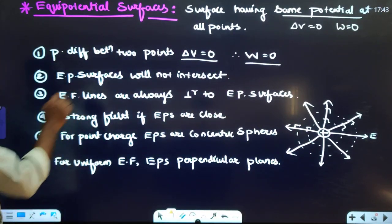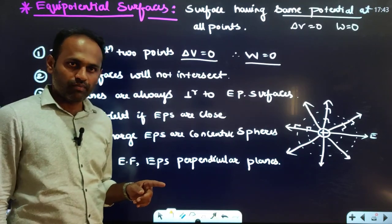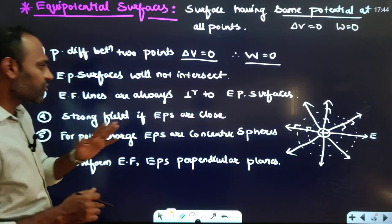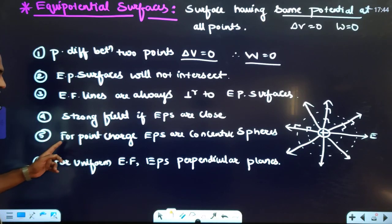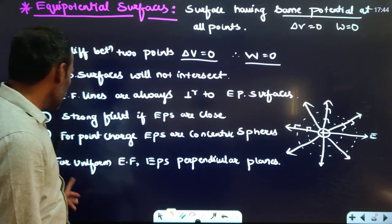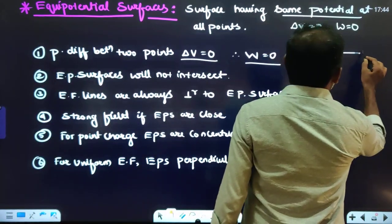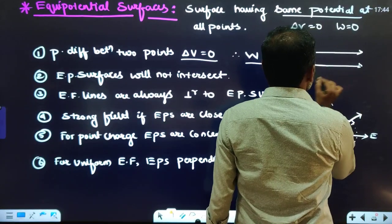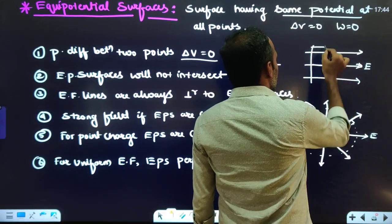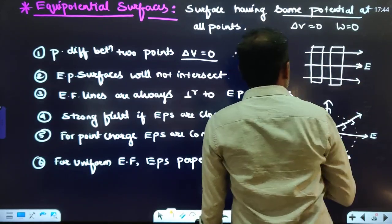Fourth property: where equipotential surfaces are close together, the field is strong; where they are far apart, the field is weak. For a uniform electric field, equipotential surfaces are planes perpendicular to the field direction.